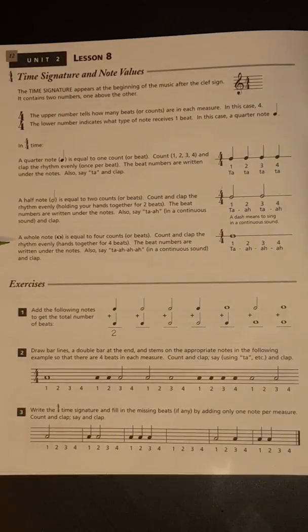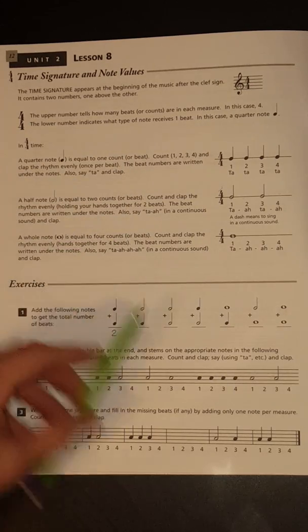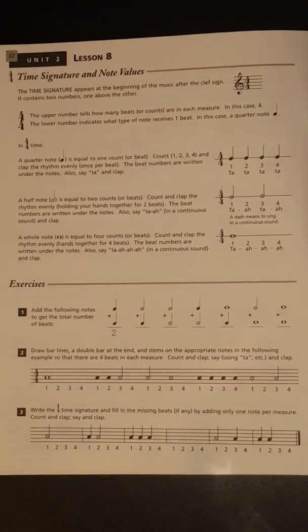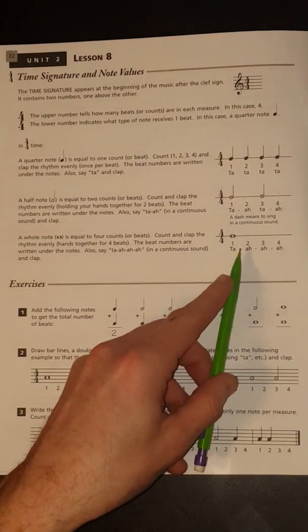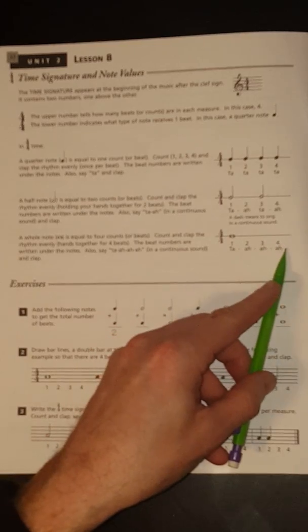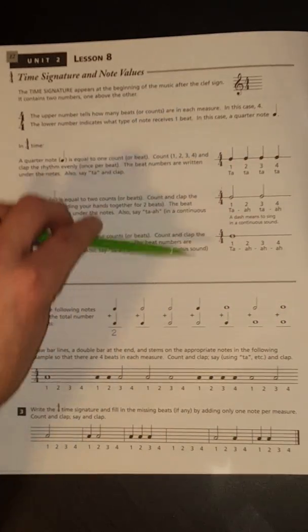The next one. A whole note is equal to 4 counts or beats. Count and clap the rhythm evenly, hands together for 4 beats. The beat numbers are written under the notes. Also say ta and a continuous sound and clap. Again, just like the half note, a whole note has a little bit longer note value than the quarter note.